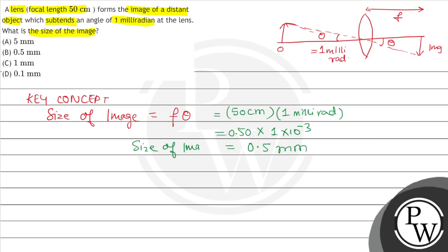So this will be the size of the image. If we look at options, what is the correct option? The correct option will be option B. So the answer is option B.